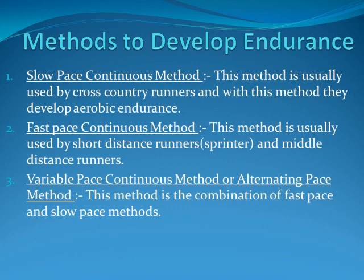Methods of developing endurance: number one, slow pace continuous method — this method is usually used by cross-country runners to develop aerobic endurance. Number two, fast pace continuous method — this method is usually used by short distance runners, sprinters, and middle distance runners.